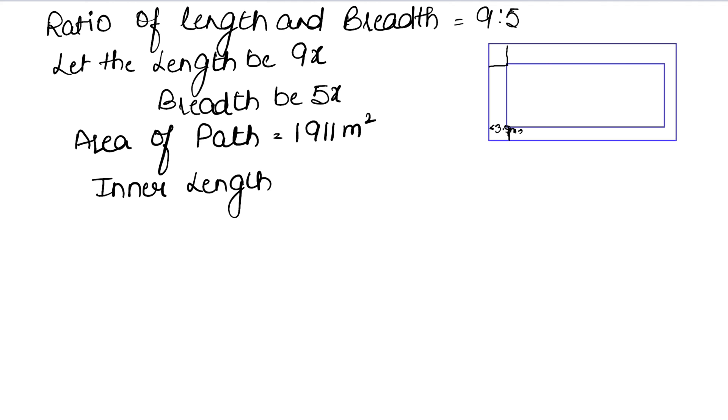Inner length - how will we get it? The outer length minus 3.5 meters from this side and 3.5 meters from that side. So it becomes 9x minus 7.